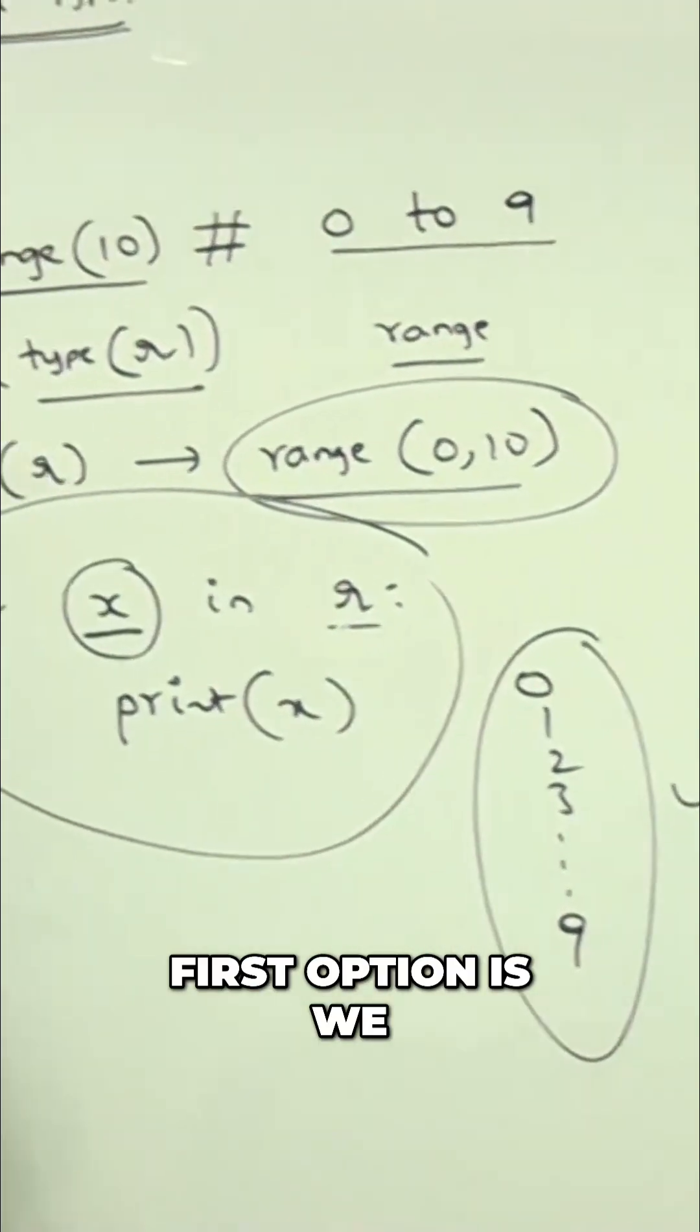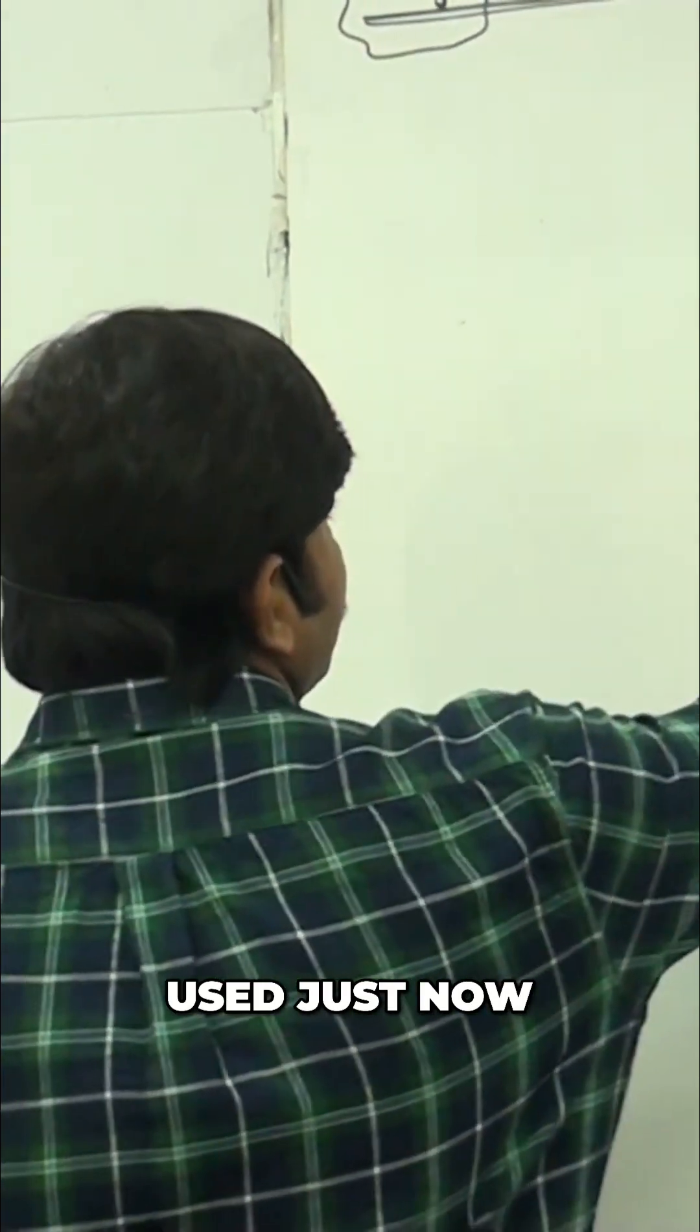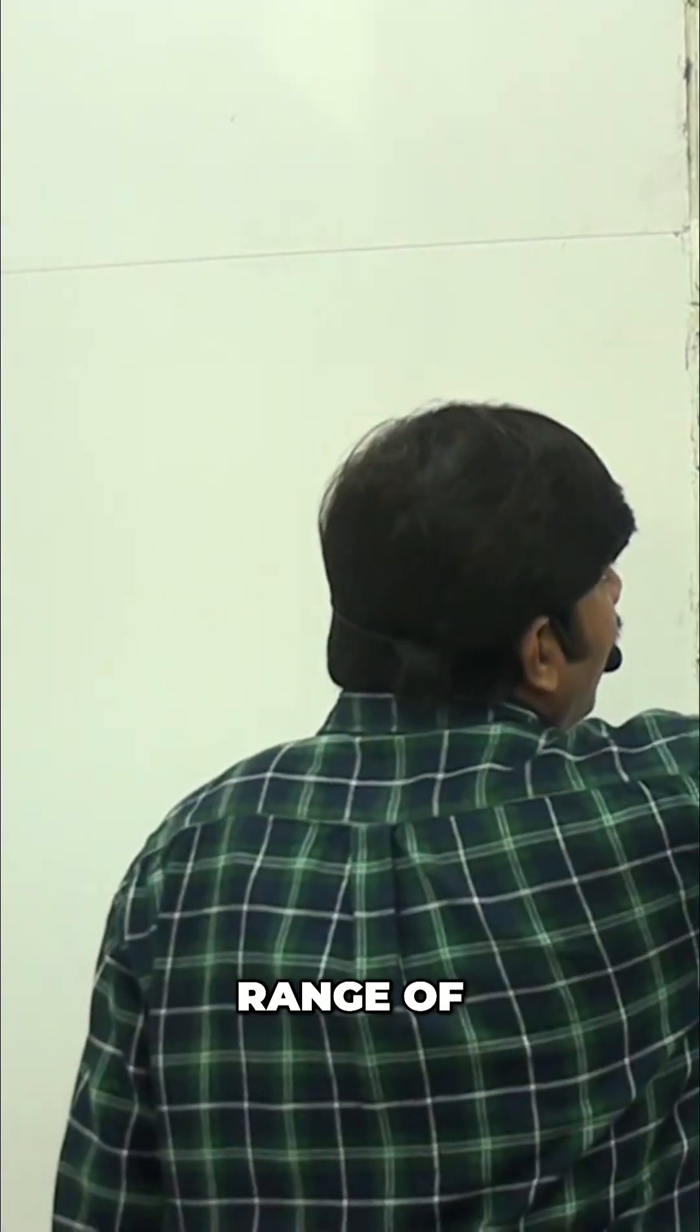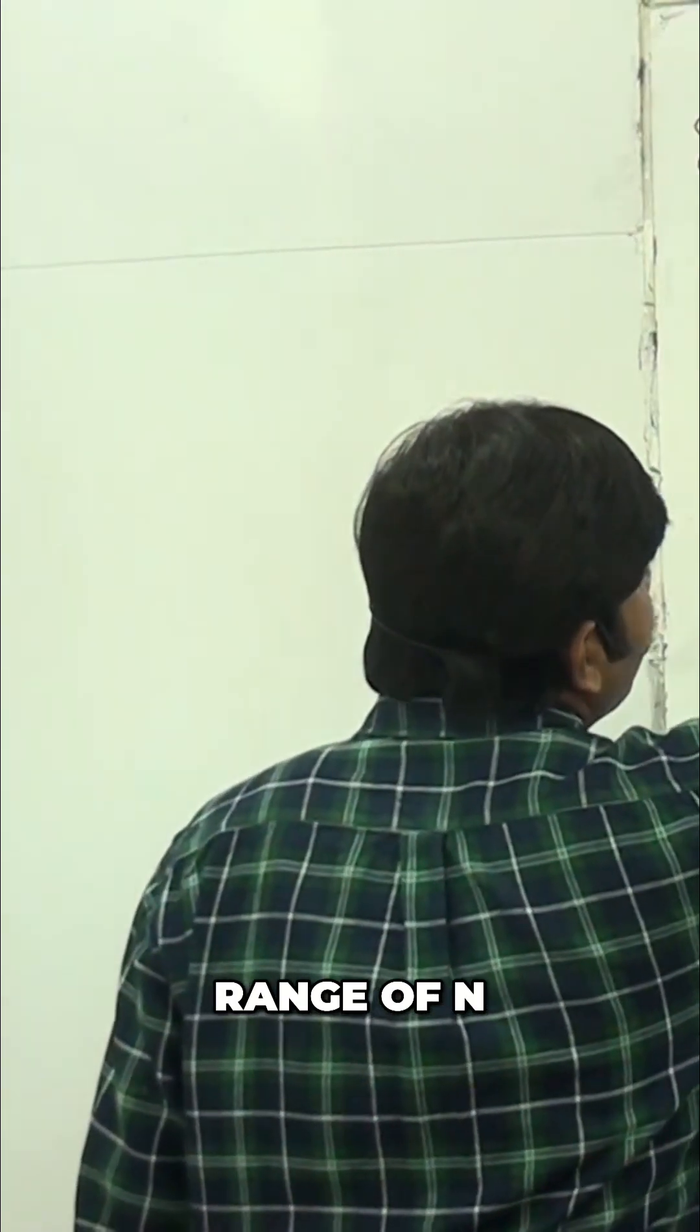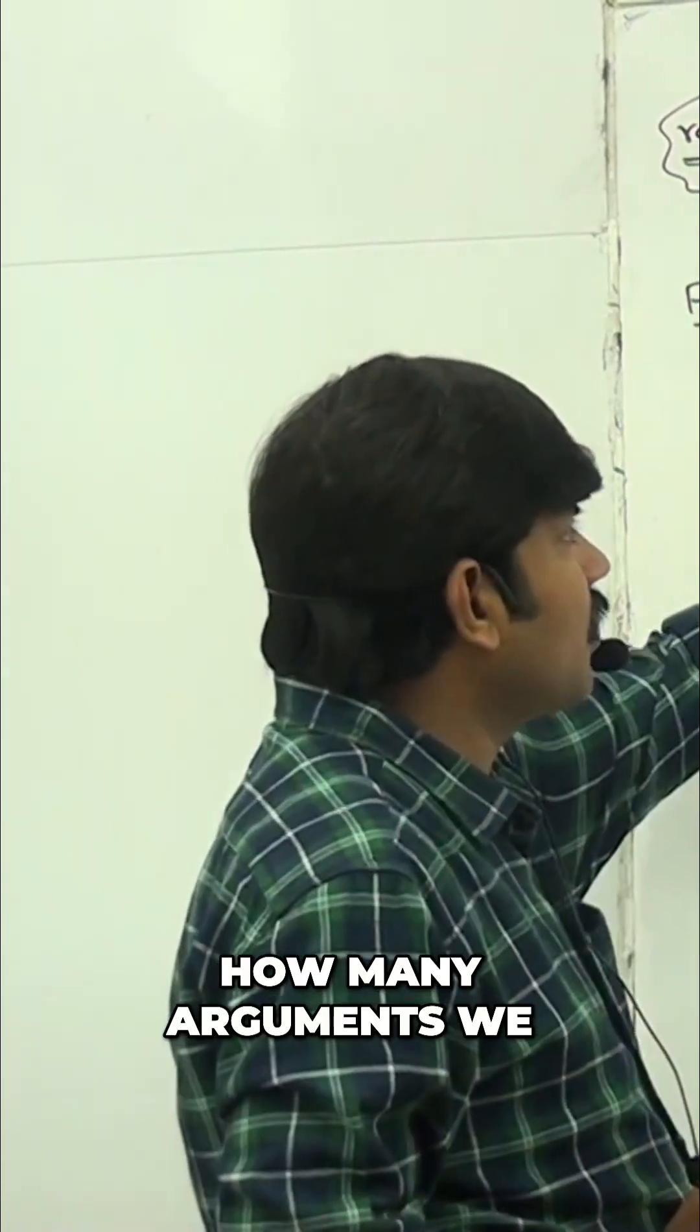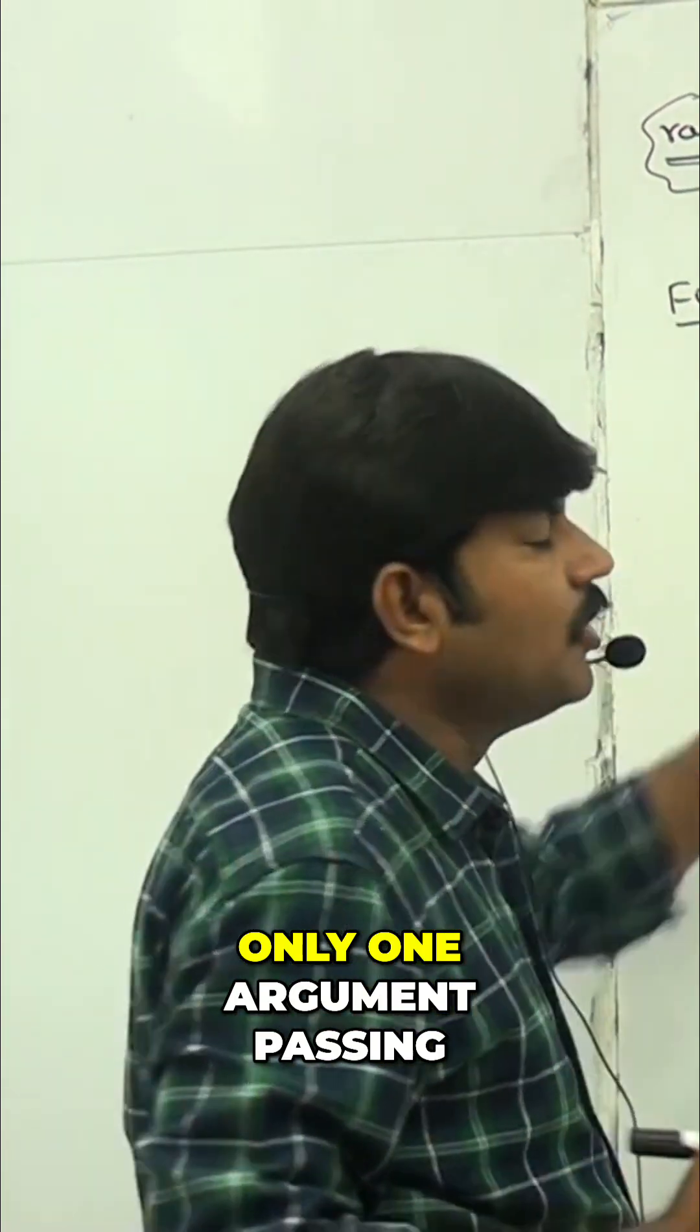The first option is the one we just used: range of n. How many arguments? Only one argument passing.